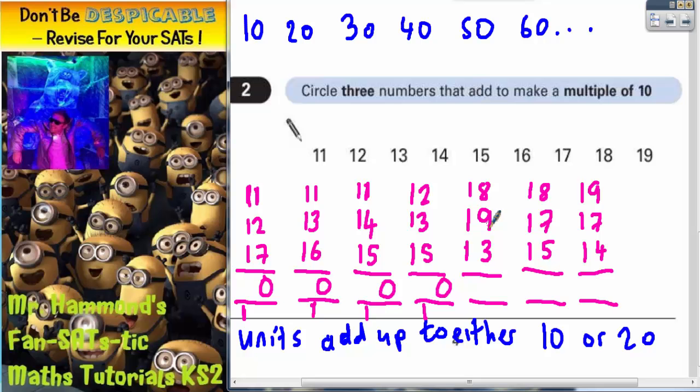If we go for the bigger ones, eight plus nine is seventeen, plus three is twenty. But twenty also ends in a zero. Eight plus seven is fifteen, plus five is twenty. Nine plus seven is sixteen, plus four is twenty.